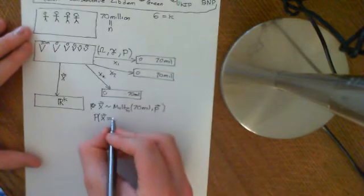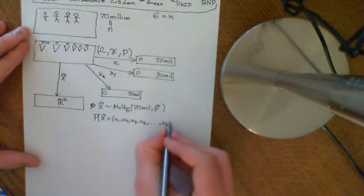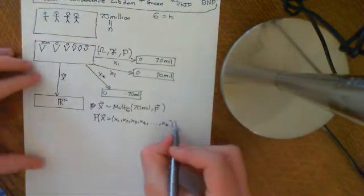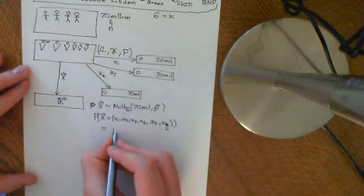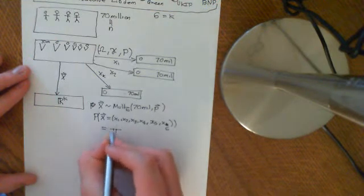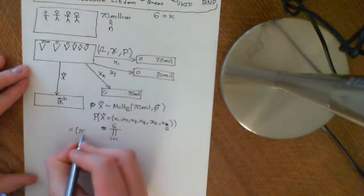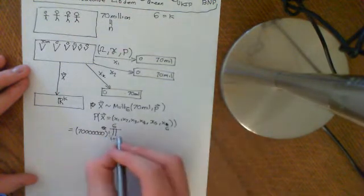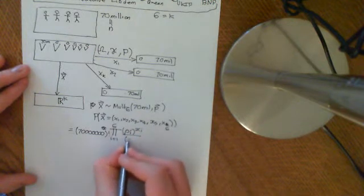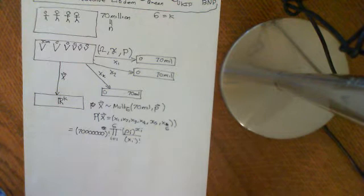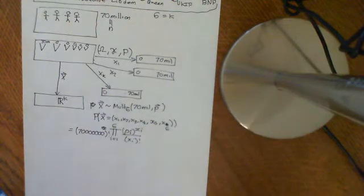We'll write out the probability mass function. The probability that X equals some specific vector (x1, x2, x3, x4, up to x6) is equal to the product over i from 1 to 6 of: out front you have n factorial — so 70 million factorial, which is some enormous number — and then P_i to the power of x_i divided by x_i factorial. So there is our probability mass function. In principle, if you told me what these probabilities were, I could find you the probability of a specific outcome of the general election.